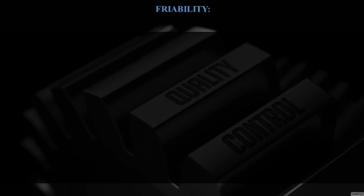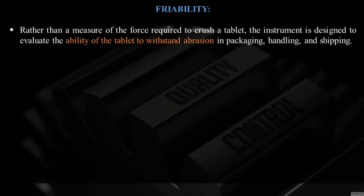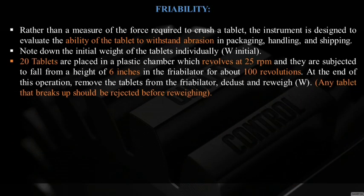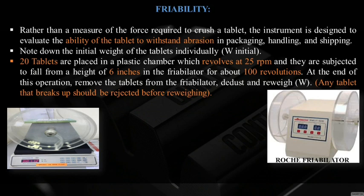Rather than measuring the force required to crush a tablet like a hardness tester, the friabilator is designed to evaluate the ability of the tablet to withstand abrasion during packaging, handling, and shipping. Note the initial weight of 20 tablets (W-initial). The 20 tablets are placed in a plastic chamber — the Roche friabilator — which revolves at 25 rpm, subjecting tablets to falling from a height of 6 inches for about 100 revolutions, running for 4 minutes.